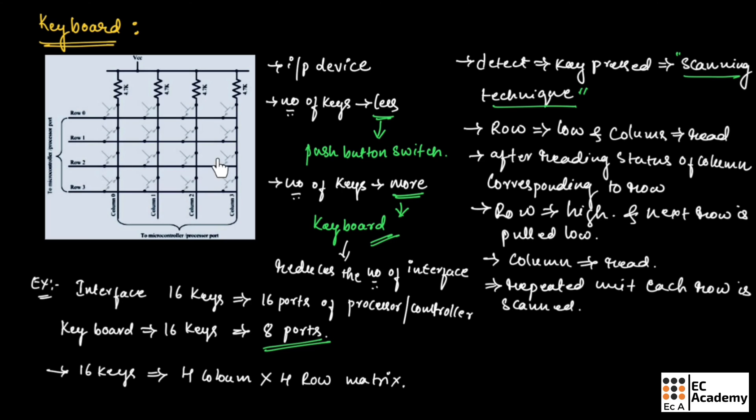Now, let us understand how these keys are scanned in keyboard. All the rows are made 0 initially. And since each column are connected to VCC, these columns will be having value as 1.